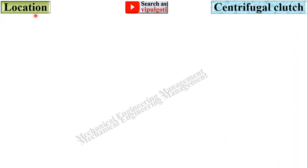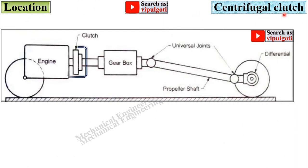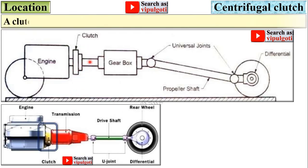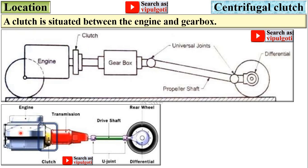Now let's look at the location of the centrifugal clutch. In this figure you can see the clutch is positioned between the engine and gearbox. This is the engine, this is the gearbox, and the clutch is situated in between them.